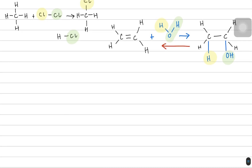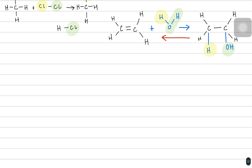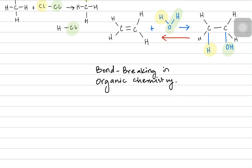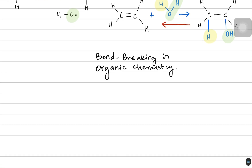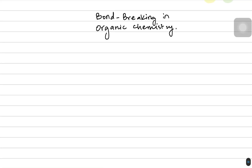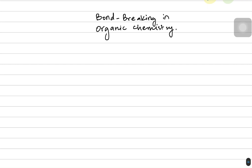So those are the three main categories of organic reactions. Let's introduce two more definitions to help us understand how bonds are generally activated for reaction. We'll talk about bond breaking in organic chemistry. The reason we give extra attention to bond breaking is because new types of mechanisms will be introduced here.